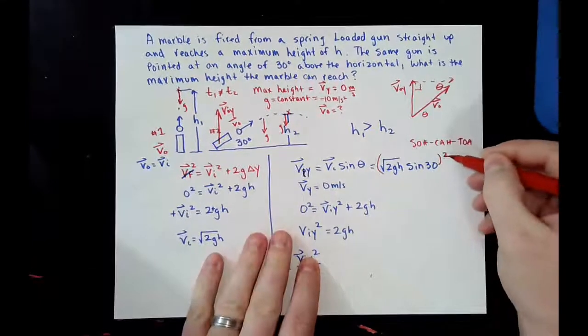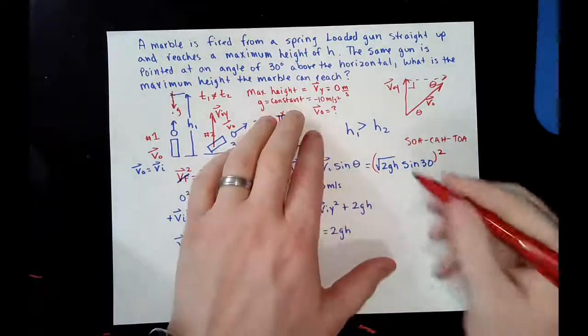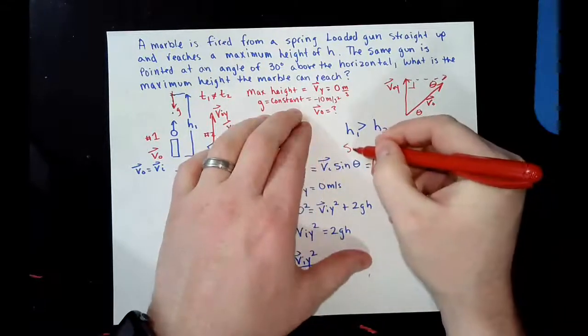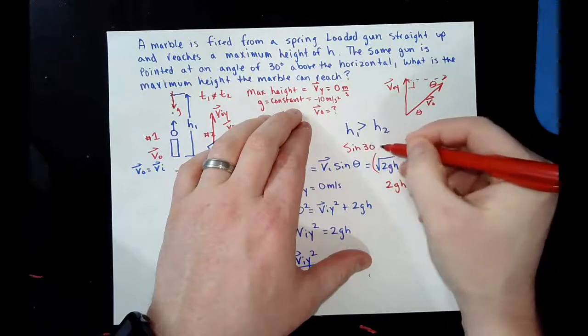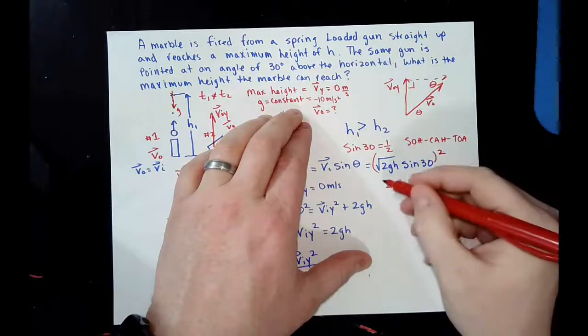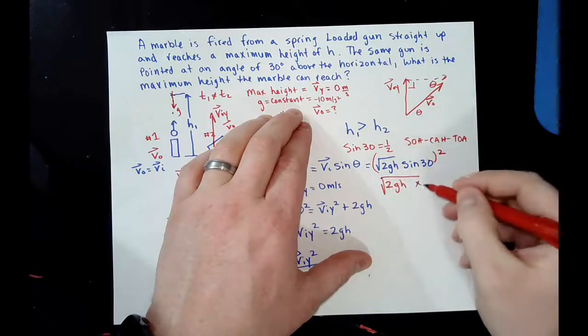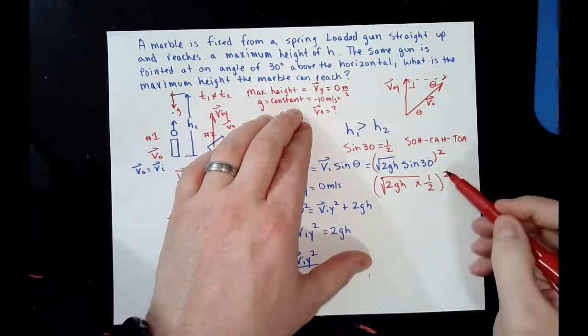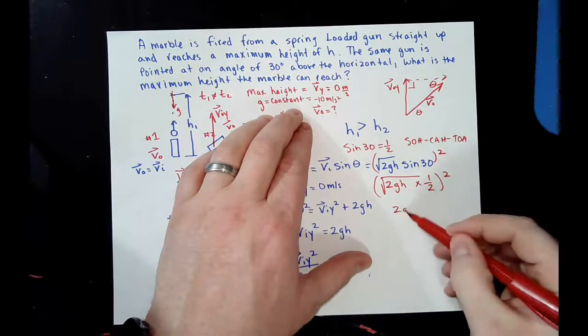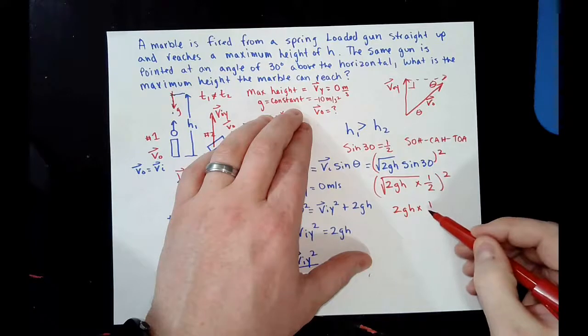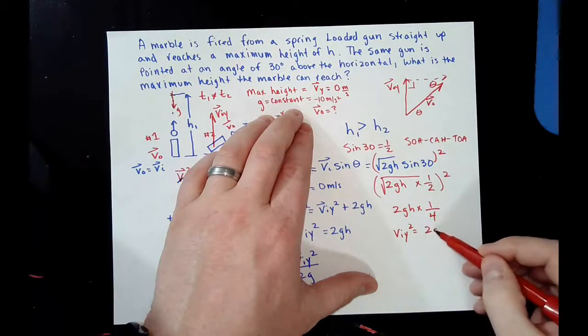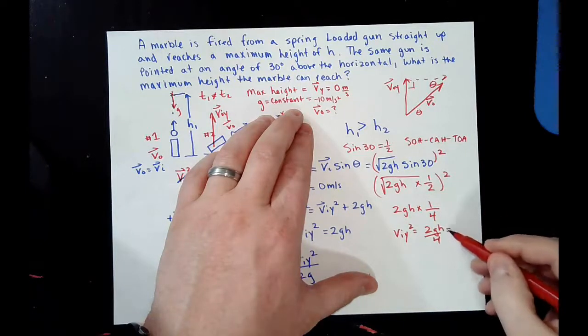Now, what's interesting is when you square this, you just get 2gh. And the sine of 30 is actually equal to 1 half. So, actually, what we were squaring is this. So, we're going to square this. So, again, whenever you square this, this square root goes away. So, you have 2gh times the square of 1 is just 1, and the square of 2 is just 4. So, v i y squared is just 2gh over 4. That simplifies to gh all over 2.